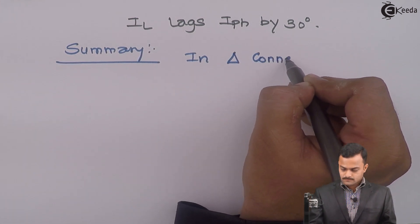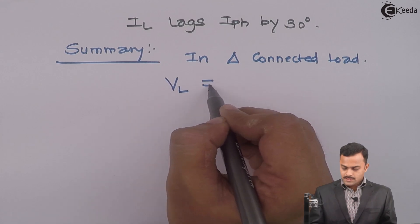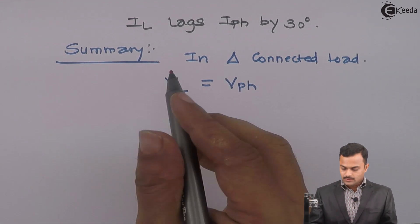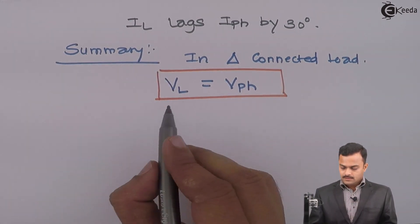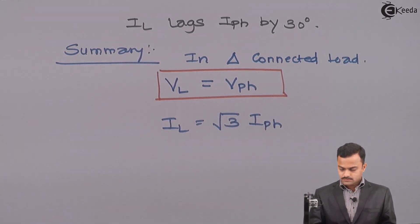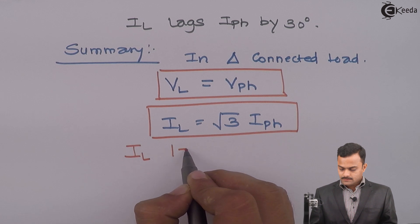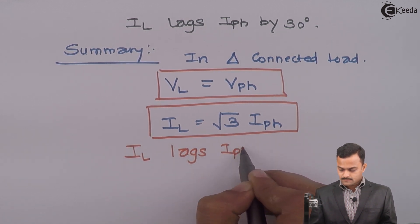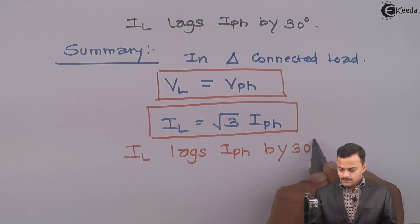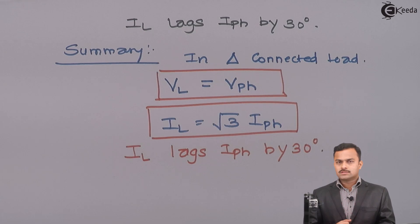So to summarize: for a Delta connected load we derived two relationships. First, line voltage equals phase voltage: V_L = V_PH. Second, line current is √3 times phase current: I_L = √3 × I_PH (magnitude relationship), and line current lags phase current by 30 degrees (phase relationship). These relationships for Delta connected load are important to remember, as we are going to use them for solving numerical problems.